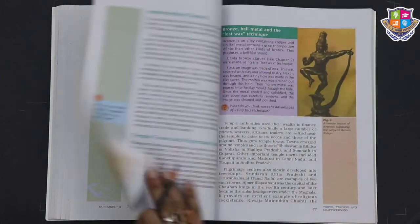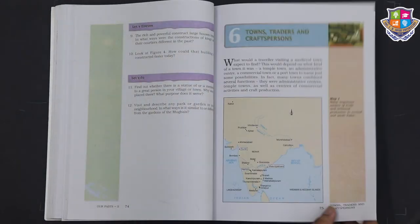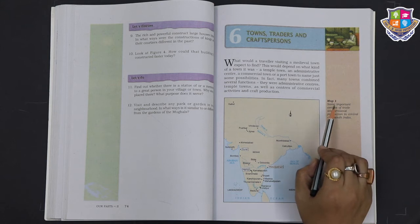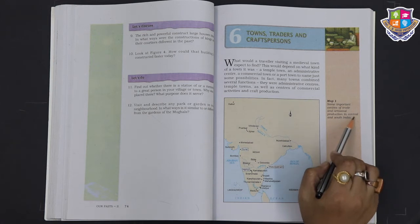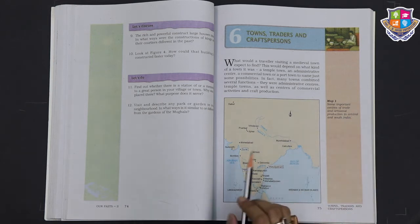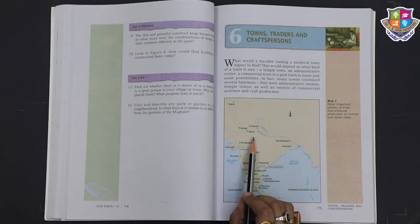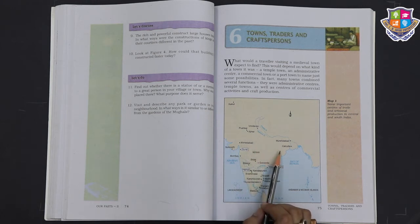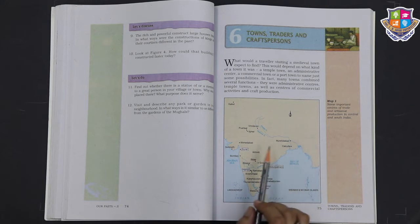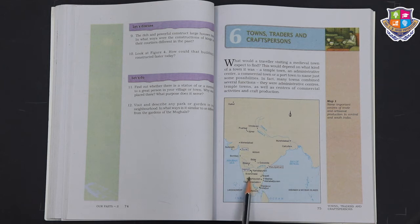Before discussing administrative centers, let us see on map one some important centers of trade and artisanal production in central and south India. Central India had Ahmedabad, Vrindavan, Ajmer, Murshidabad, Kolkata, and Somnath. In South India it was Kamalapuram, Shavimalai, Kanchipuram, Thiruvanmalai, and Madurai. All these were artisan production and centers of trade.